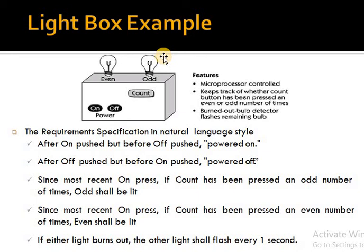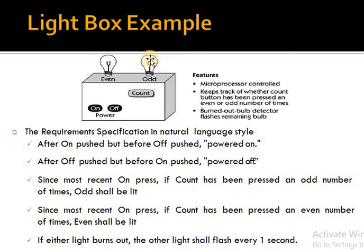The system is checking how many times the button has been pressed — whether it has been pressed an even number of times or an odd number of times. There are two buttons: on and off. What will happen first? The system will be in off state. If it is in the off state and someone presses on, the count of the button pressed will cause the system to turn on.